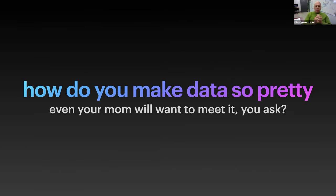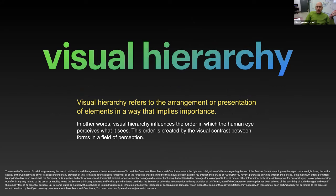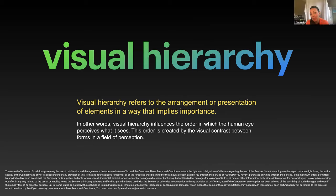So how do you make data so pretty, even your mom will want to meet it? Visual hierarchy. Visual hierarchy refers to the arrangement and representation of elements in a way that implies importance. In other words, visual hierarchy influences the order in which the human eye perceives what it sees.